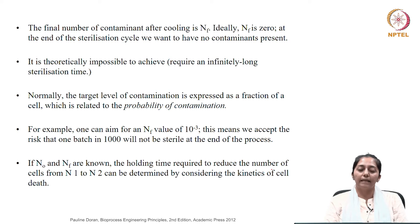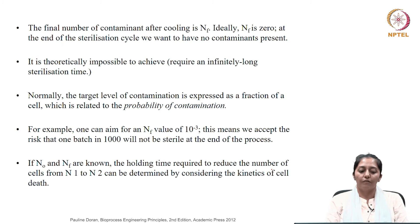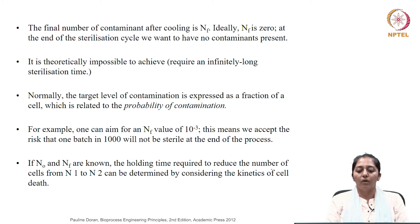Ideally, the final number of contaminants would be 0 in a sterilization process by the end of one sterilization cycle. But it is theoretically impossible to achieve at large scales, which may require infinitely long sterilization time. Normally, the target level of contamination is expressed as a fraction of a cell, which we described as the probability of contamination. For example, one can aim for an N_F value of 10 to the power of minus 3, which implicates that it is equivalent to the risk of 1 batch in 1000 batches not being successfully sterilized.